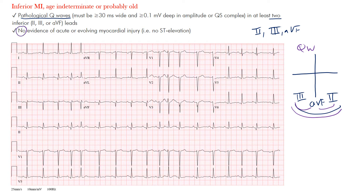You also want to make sure there is no evidence of acute or evolving myocardial injury — meaning there's no ST segment elevation. That's a really important thing when we're defining and coding this on the EKG.